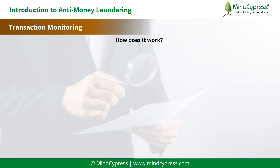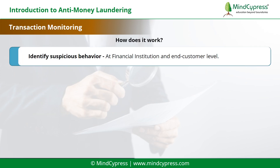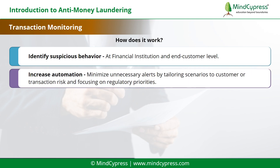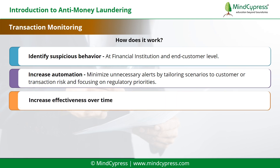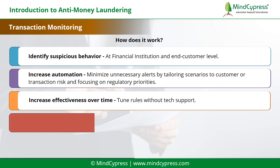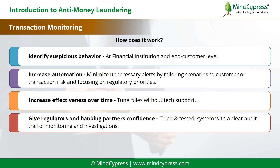How does it work? First, identify suspicious behavior at financial institution and end-customer level. Second, increase automation — minimize unnecessary alerts by tailoring scenarios to customer or transaction risk and focusing on regulatory priorities. Third, increase effectiveness over time — tune rules without tech support. Fifth, give regulators and banking partners confidence through a tried-and-tested system with a clear audit trail of monitoring and investigation.